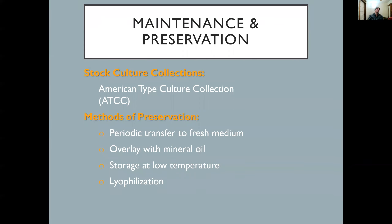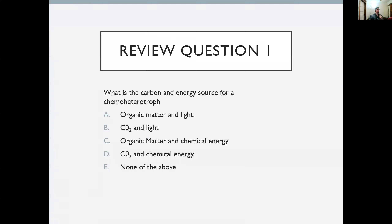For maintaining and preserving cultures, stock cultures can be obtained from the American Type Culture Collection. There are four main preservation methods: periodically transferring to fresh medium; overlaying with mineral oil; storing at very low temperatures — which slows chemical reactions by reducing molecular movement, essentially pausing the microbes; and lyophilization, which is essentially freeze-drying and significantly reduces damage to the organisms.